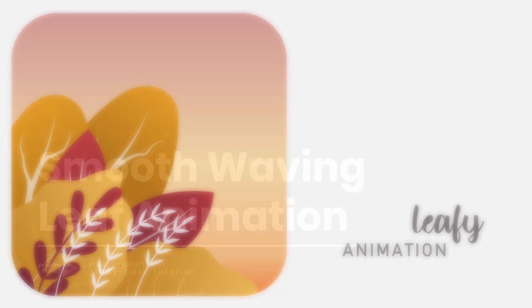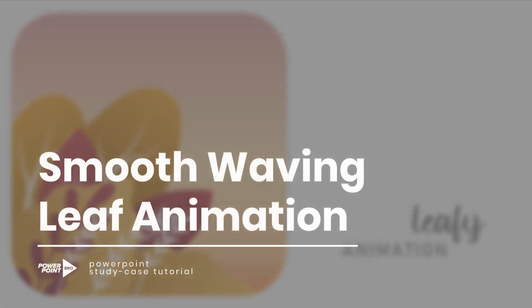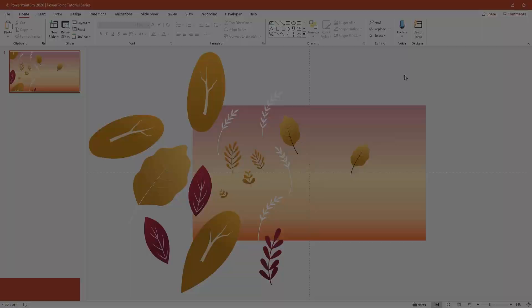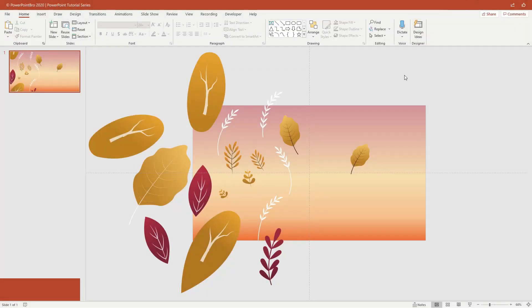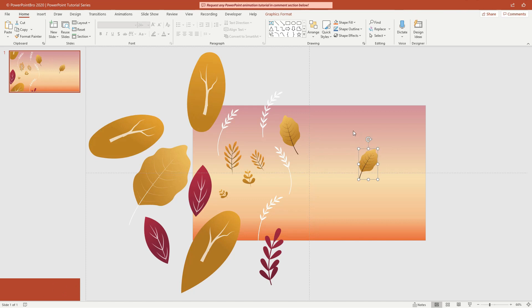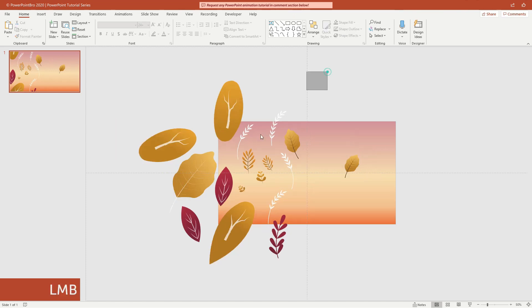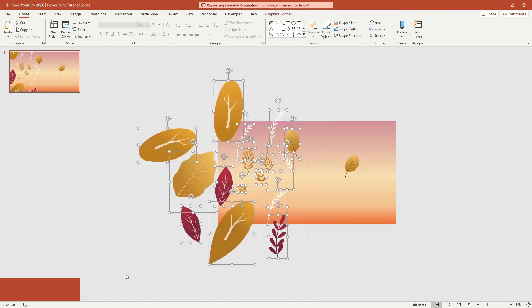Hello everyone. Today I'm going to share a tutorial on how to create waving leaf animations in PowerPoint like this. So this is my design assets. We will add animation to this one leaf first, and later we will copy for the other leaves.